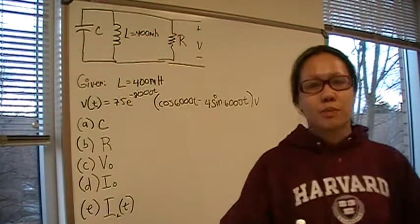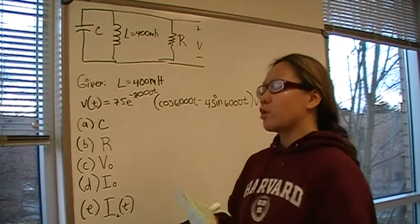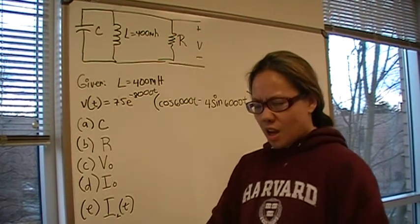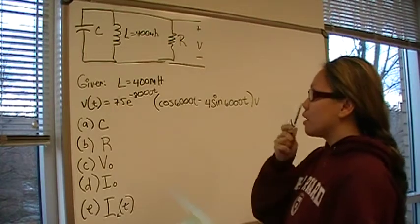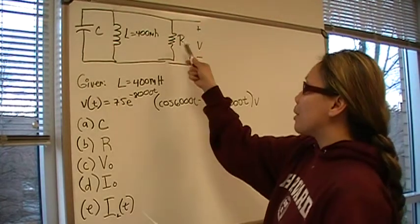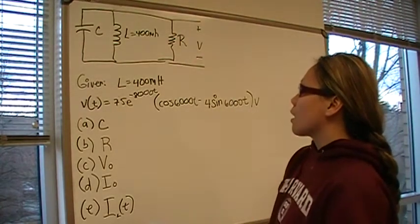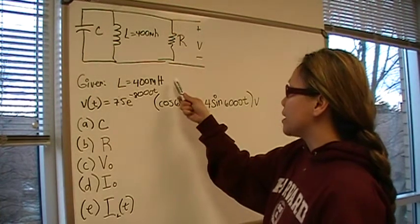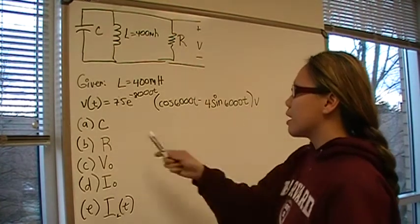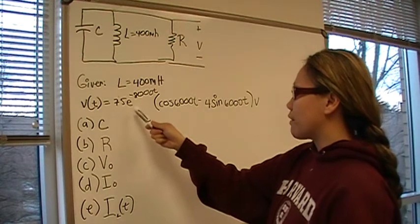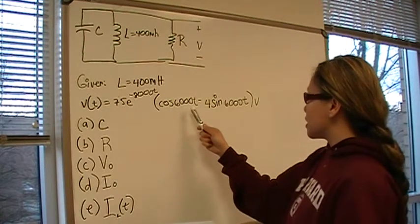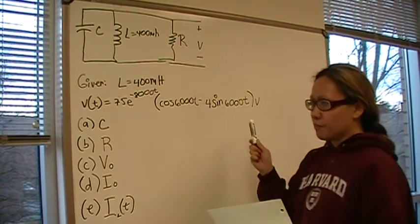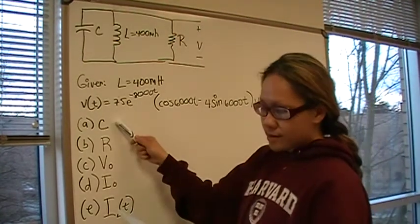Hi, you guys. I'm going to solve Nilsson's circuits problem from chapter 8, problem number 7. We're given a parallel RLC circuit and we're given that the inductance is 400 millihenries and the voltage is 75e to the negative 8,000t times cosine 6,000t minus 4 sine 6,000t.